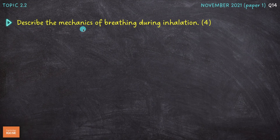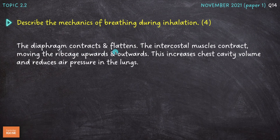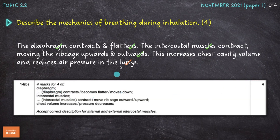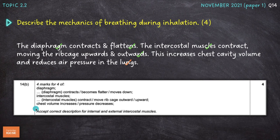Next question: describe the mechanics of breathing during inhalation. This is the third time we've had a question on this topic. The diaphragm contracts and flattens; the intercostal muscles contract, moving the ribcage upwards and outwards. This increases chest cavity volume and reduces air pressure in the lungs, causing air to move in from the atmosphere. The mark scheme awards four marks for: mentioning the diaphragm, mentioning the intercostal muscles, stating the diaphragm contracts and becomes flatter or moves down, and that the intercostal muscles move the ribcage upwards and outwards. A fifth mark is available for stating that chest volume increases and pressure decreases.